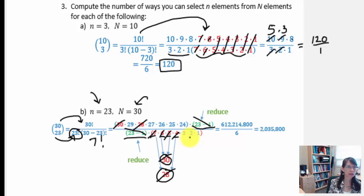Now that leaves 3 times 2, which is 6. So I could now reduce 6 in the denominator with the 24. So 24 divided by 6 leaves me 4.